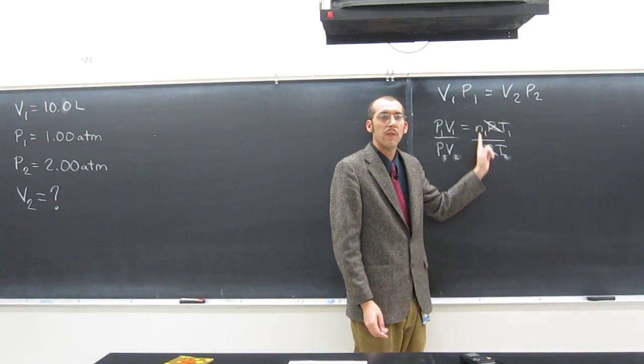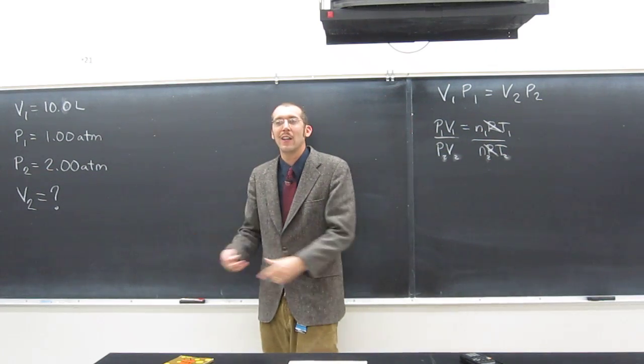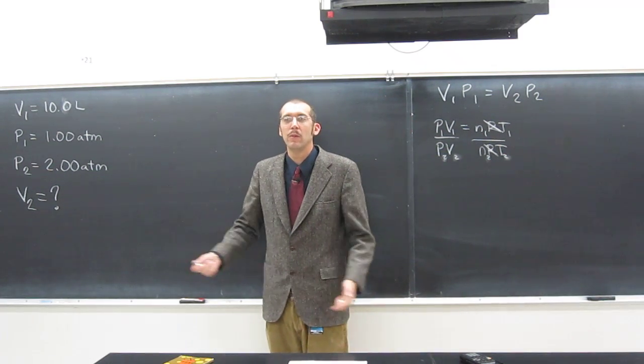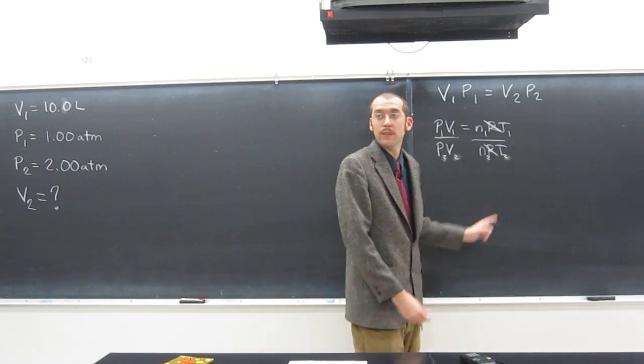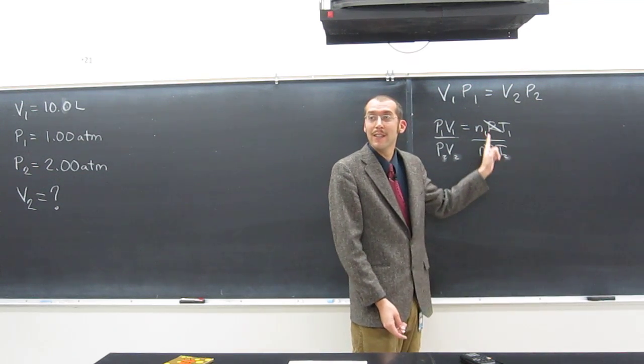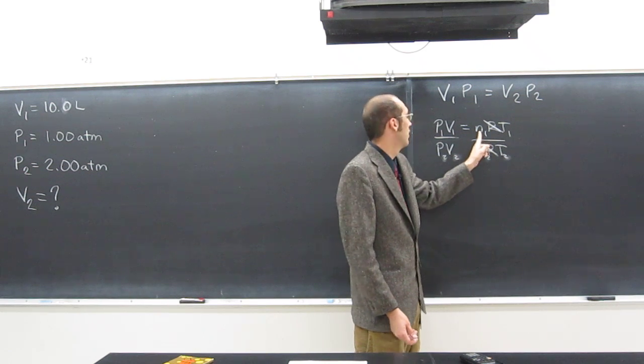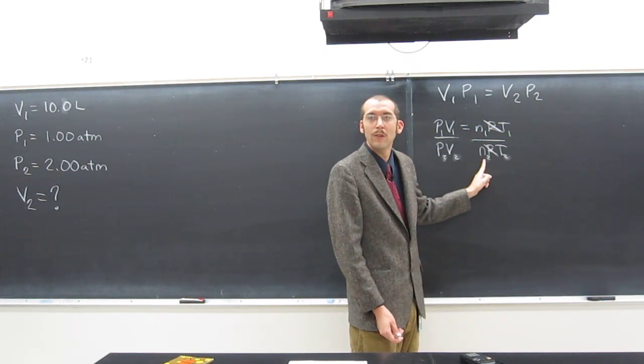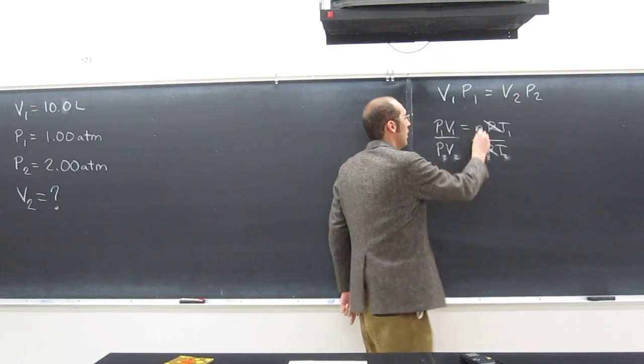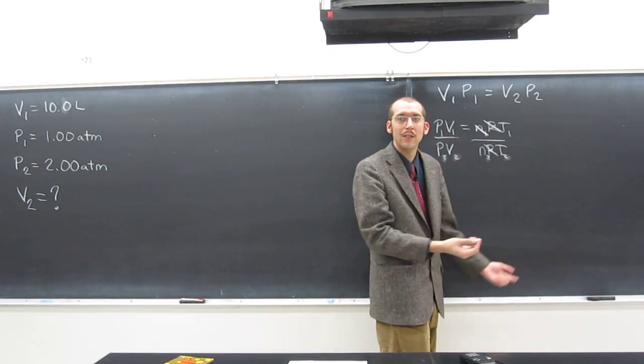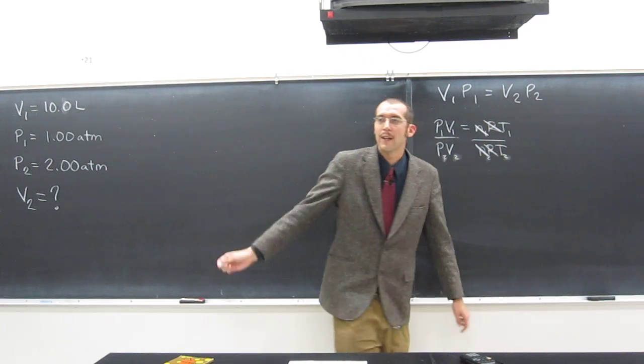Did the number of moles change? Did we add gas or take gas away from this problem? No, right? So the number of moles stayed the same. So if the number of moles was 2, right, we take 2 divided by 2, what does that do? It cancels that out, right? So N1 equals N2, effectively, so they cancel out.